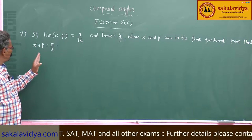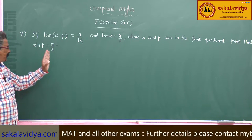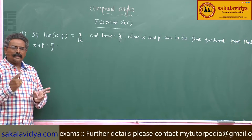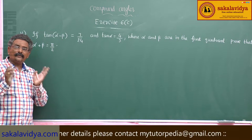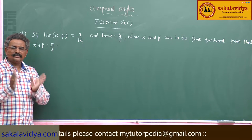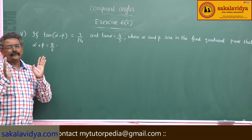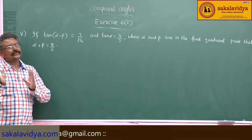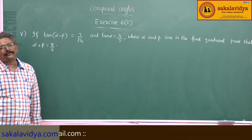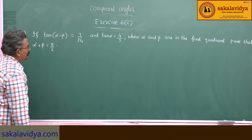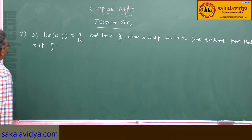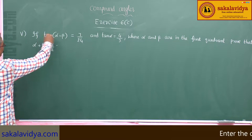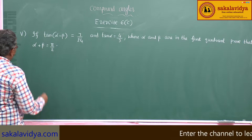To prove α + β = π/2, it is sufficient to show that cot(α + β) = 0, because cot 90° = 0. So first we have to find cot(α + β) using the given data.